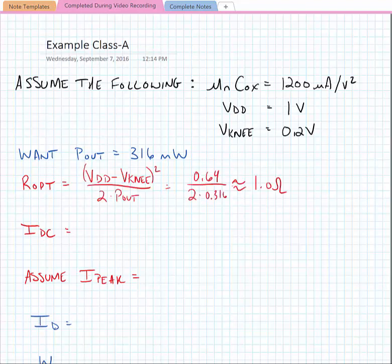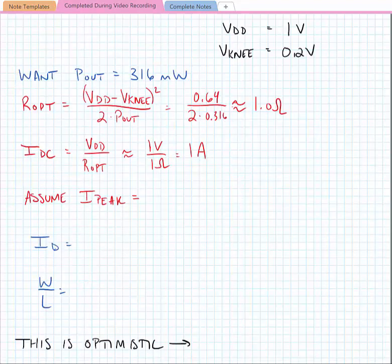Given these conditions, we can find R-Opt as VDD minus V-knee squared divided by 2 times our output power. If we plug in the numbers I've given, we can find that R-Opt would be approximately 1 ohm. Given this, the DC current would be approximately equal to VDD divided by R-Opt, which is approximately 1 volt divided by 1 ohm, or 1 amp.